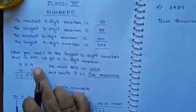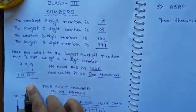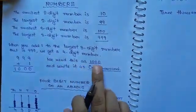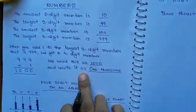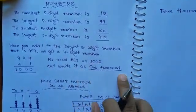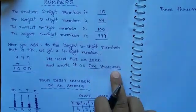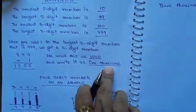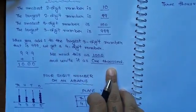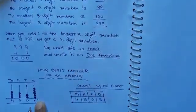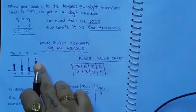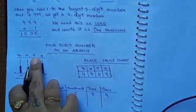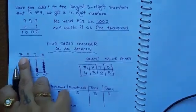999 plus 1 equals 1000. Read this as 1000 and write it as 1000. O-N-E T-H-O-U-S-A-N-D. Let us read about 4-digit numbers with the help of an abacus. Count the number of beads in the spikes that shows ones, tens, hundreds and thousands.